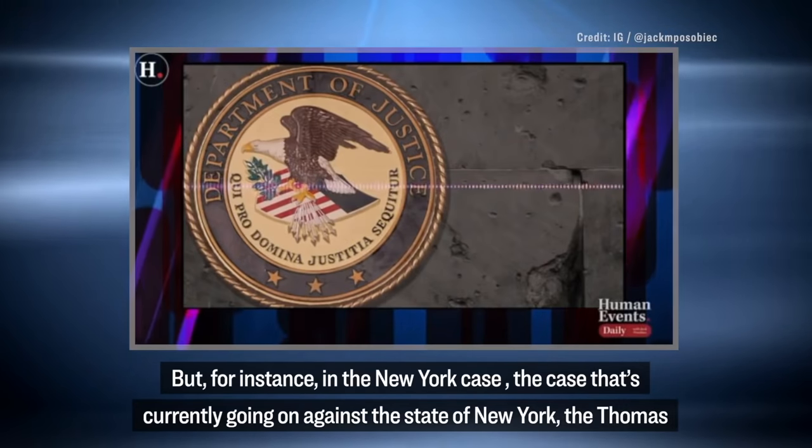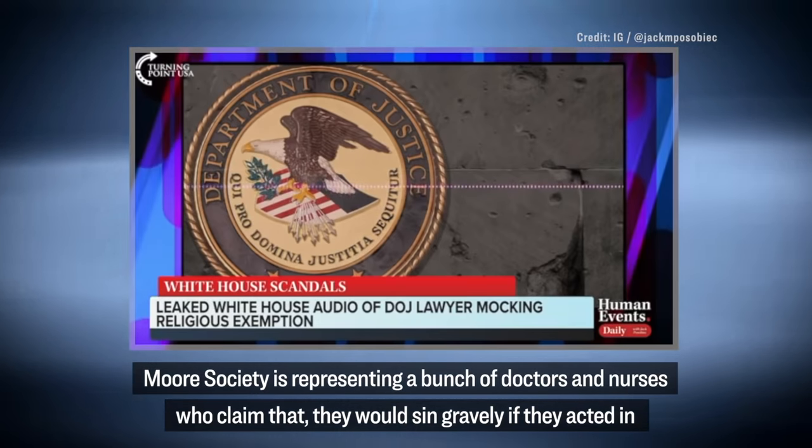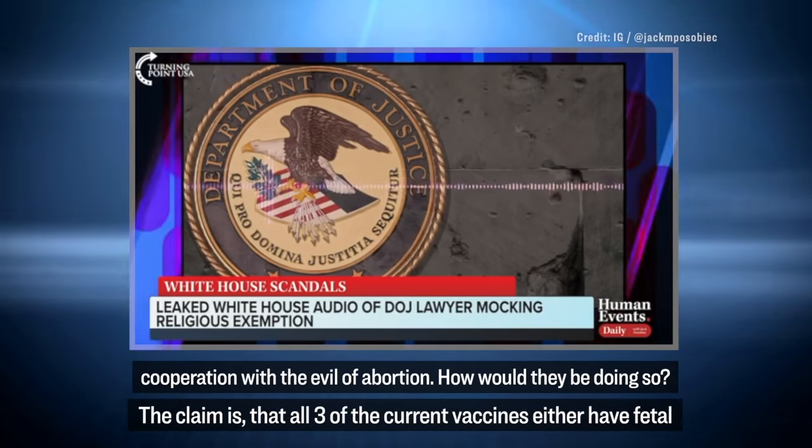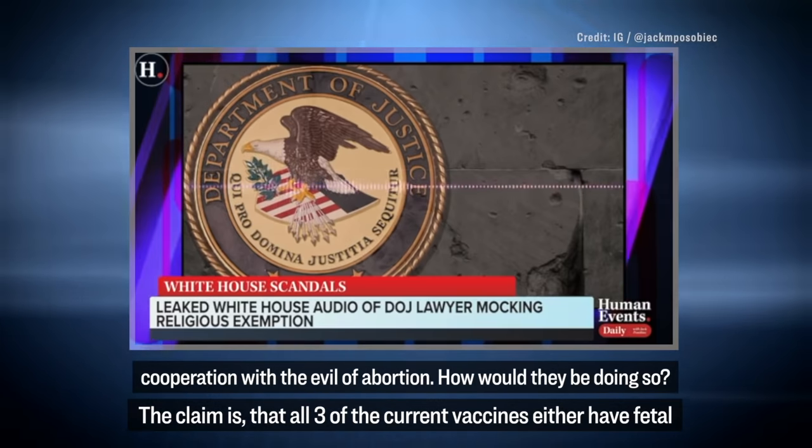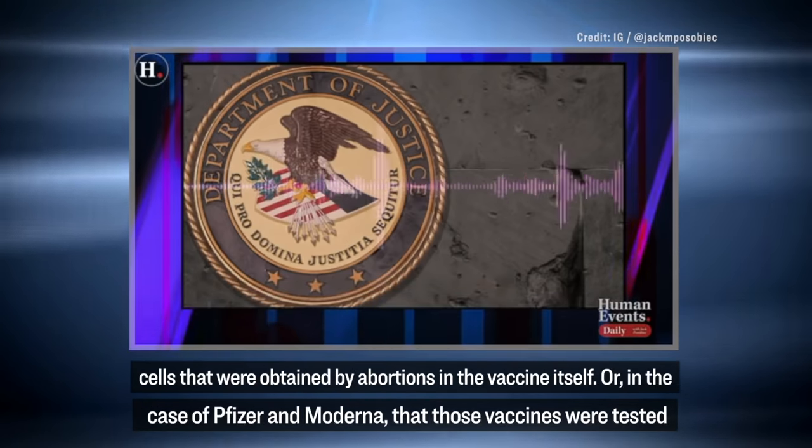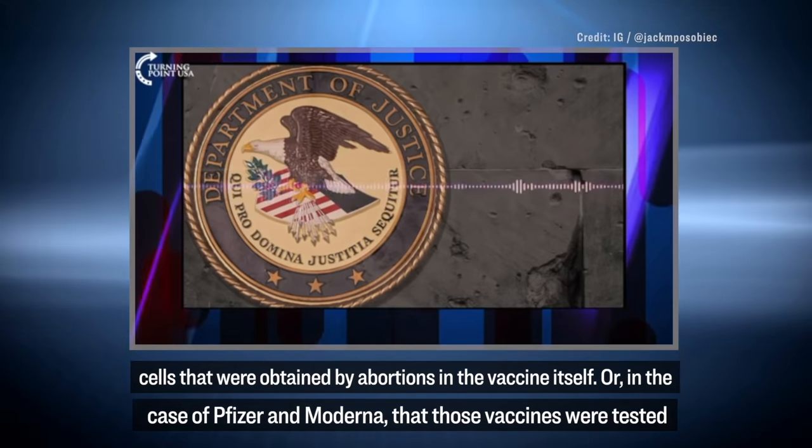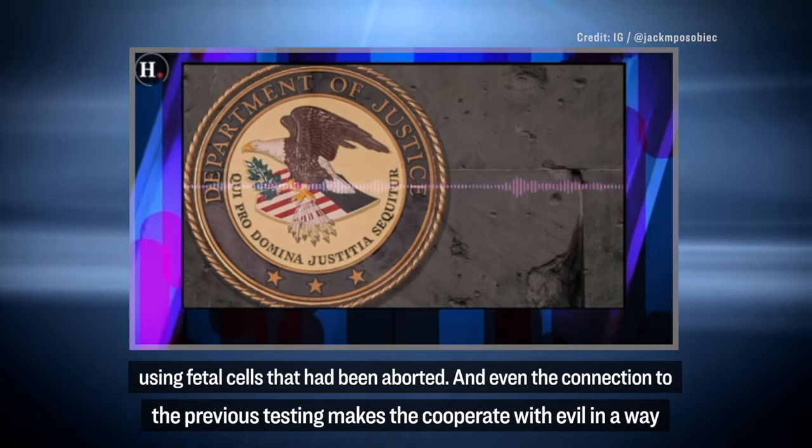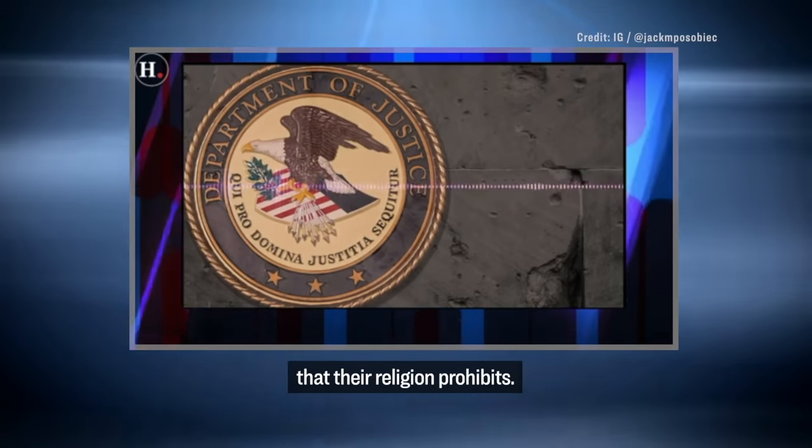And during that meeting, the attorney for the DOJ outlined to the White House how they can expect Americans with religious beliefs to try and get an exemption from the vaccine mandate. Take a listen. And for instance, in the New York case that's currently going on against the state of New York, the Thomas More Society is representing a bunch of doctors and nurses who claim that they would sin gravely if they acted in cooperation with the evil of abortion. How would they be doing so? The claim is that all three of the current vaccines either have fetal cells that were obtained by abortions in the vaccine itself, or in the case of Pfizer or Moderna, that those vaccines were tested using fetal cells that had been aborted. And even the connection to the previous testing makes them cooperative with evil in a way that their religion prohibits.